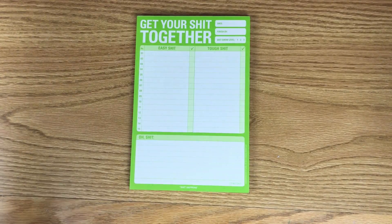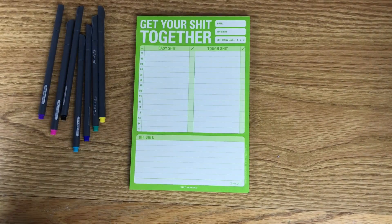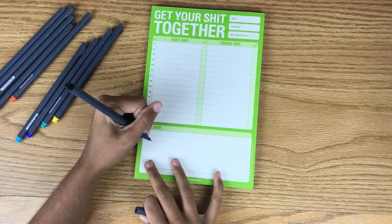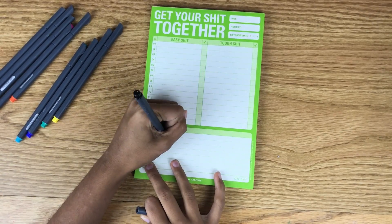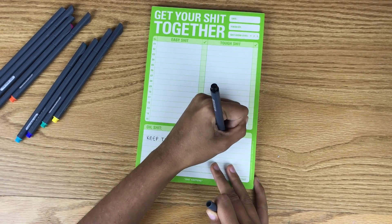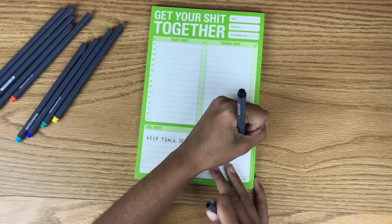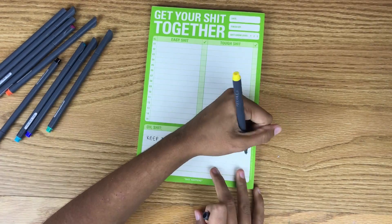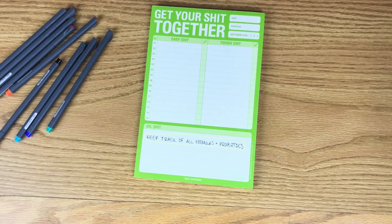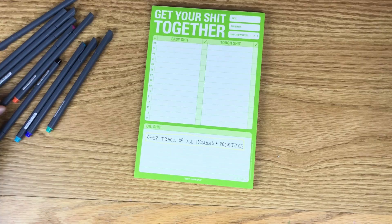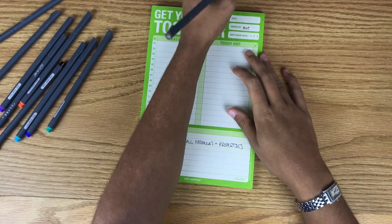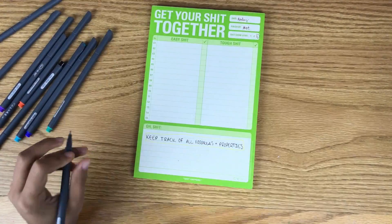As you get closer to a test or a quiz, make sure that you're keeping track of all the formulas and properties that you are going to be assessed on. Make sure that you know exactly what you're going to be assessed on, and then afterwards make a checklist of all of the topics and subtopics that you will be assessed on as well. The reason that I like to do this, and I especially like to do it on this notepad, because it sort of separates things into easy and difficult.